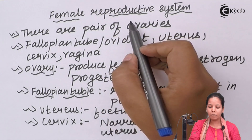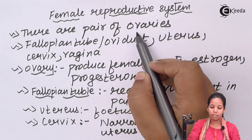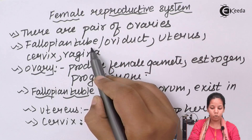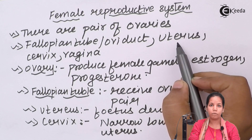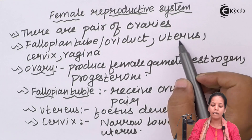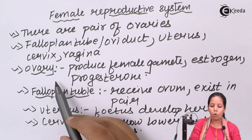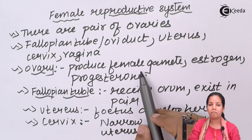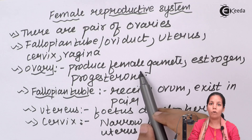In the female reproductive tract, there is a pair of ovaries. There is a fallopian tube, also termed as oviduct, and uterus which plays a major role during the birth of the child, along with cervix and vagina. Ovaries produce the female gamete — the female egg — which is haploid, non-motile, and unicellular.